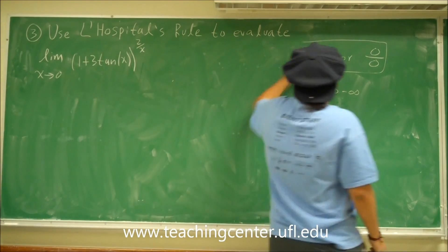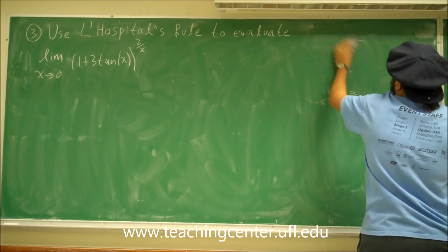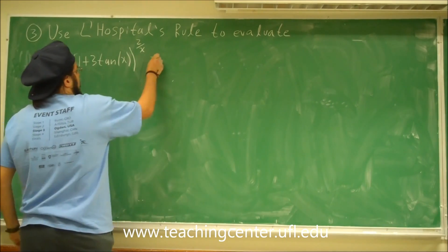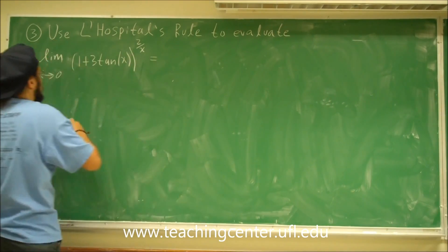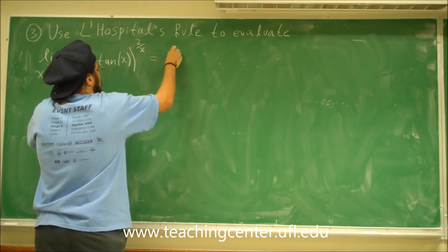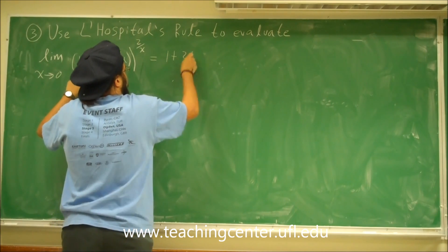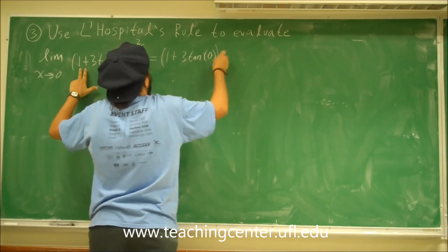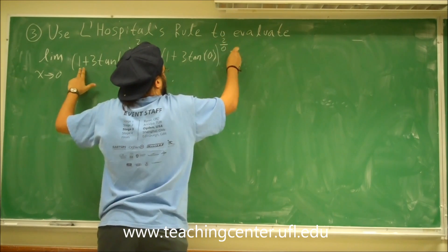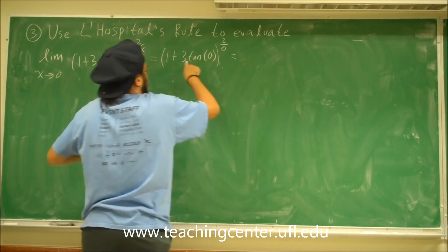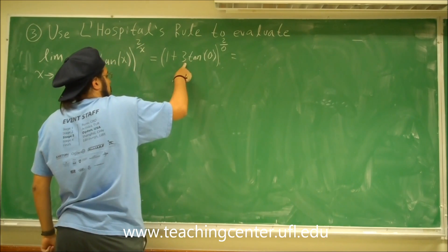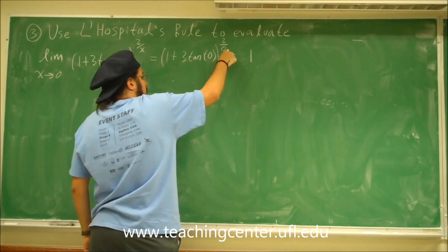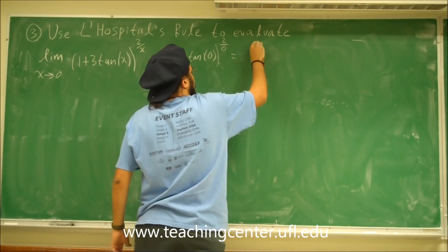Let's go ahead and see what form we get when we plug in 0. We get 1 plus 3 tangent of 0, all raised to the 2 divided by 0. Tangent of 0 is 0, so 0 times 3 is 0, plus 1 is 1. And 2 divided by 0 is a very big number — infinity.